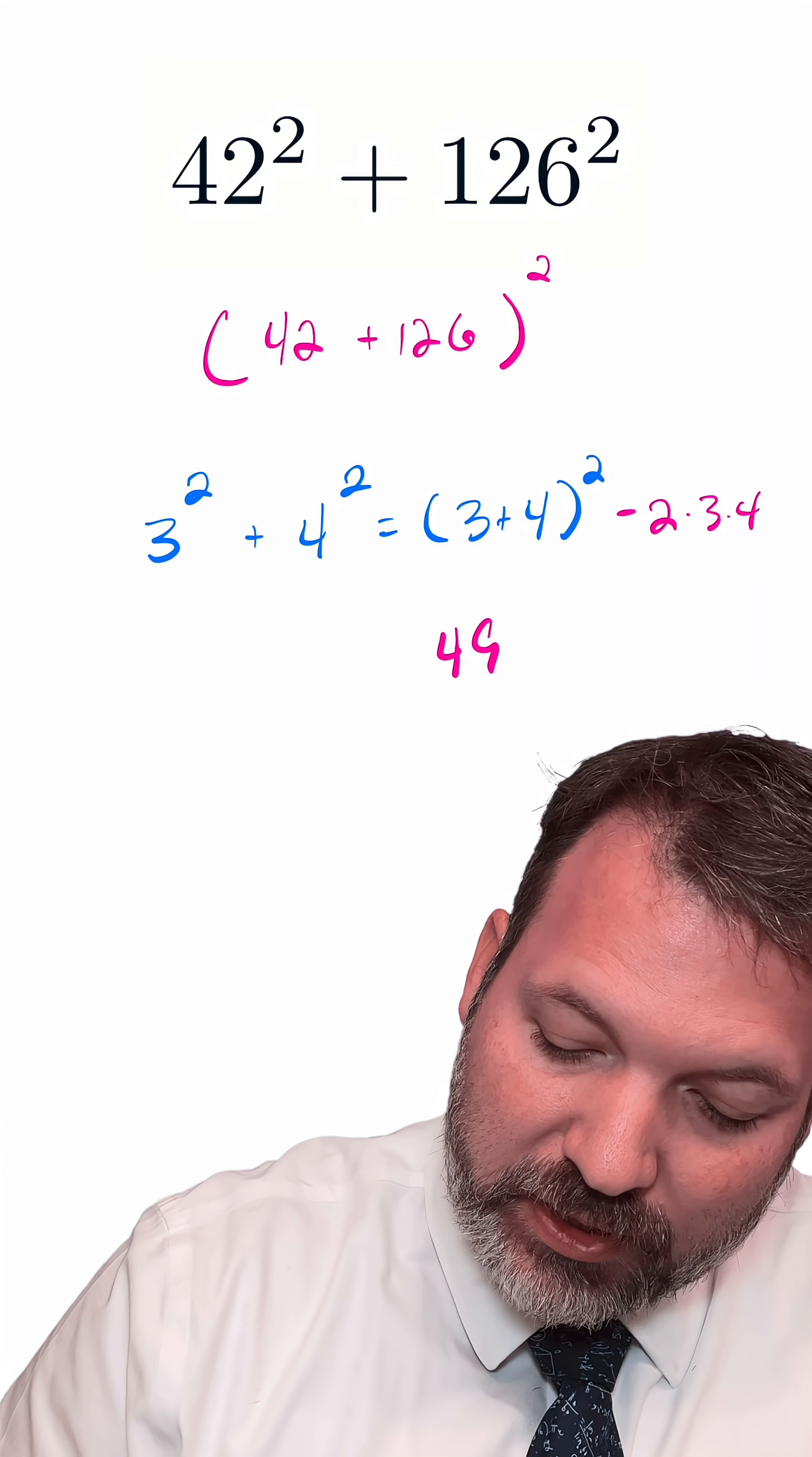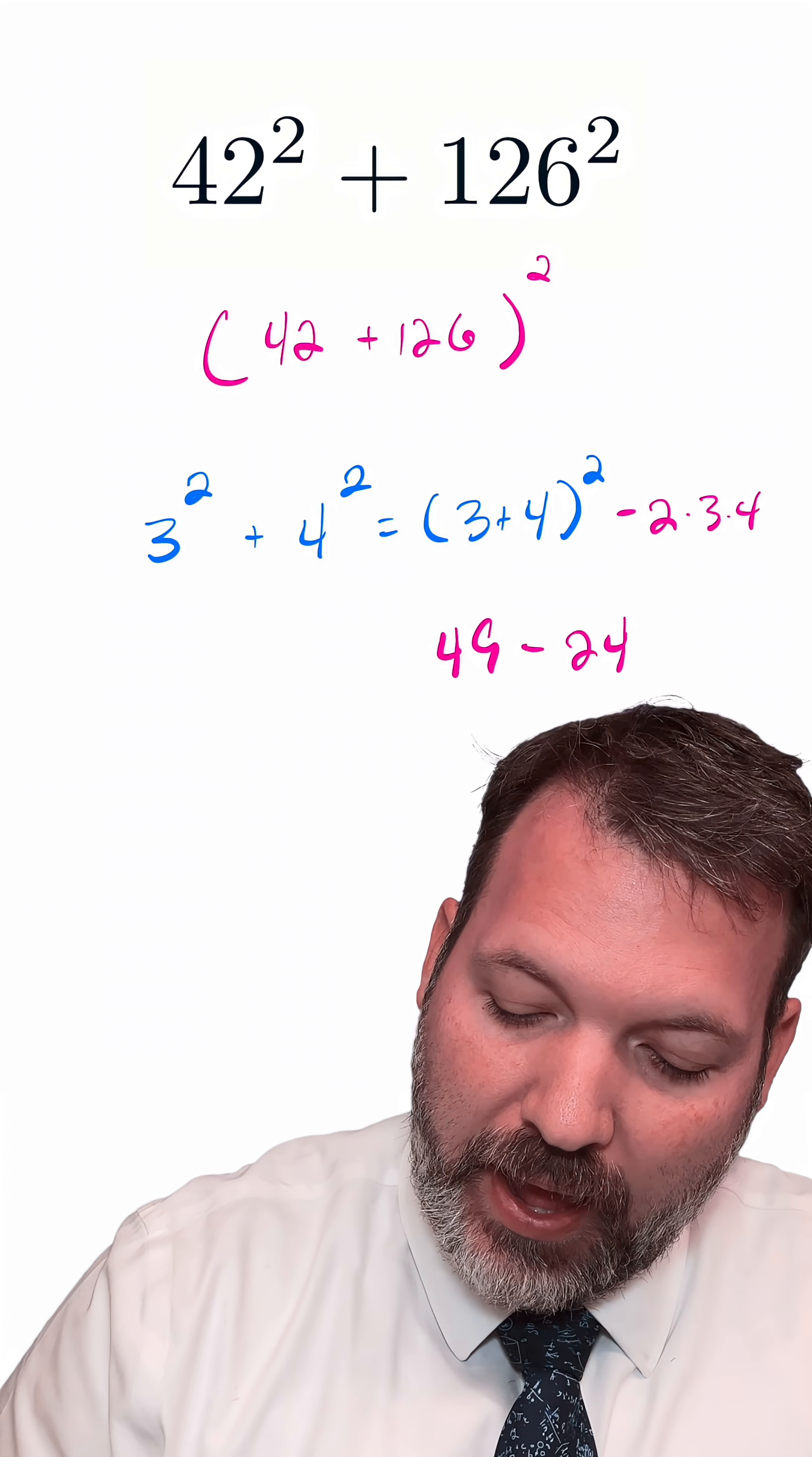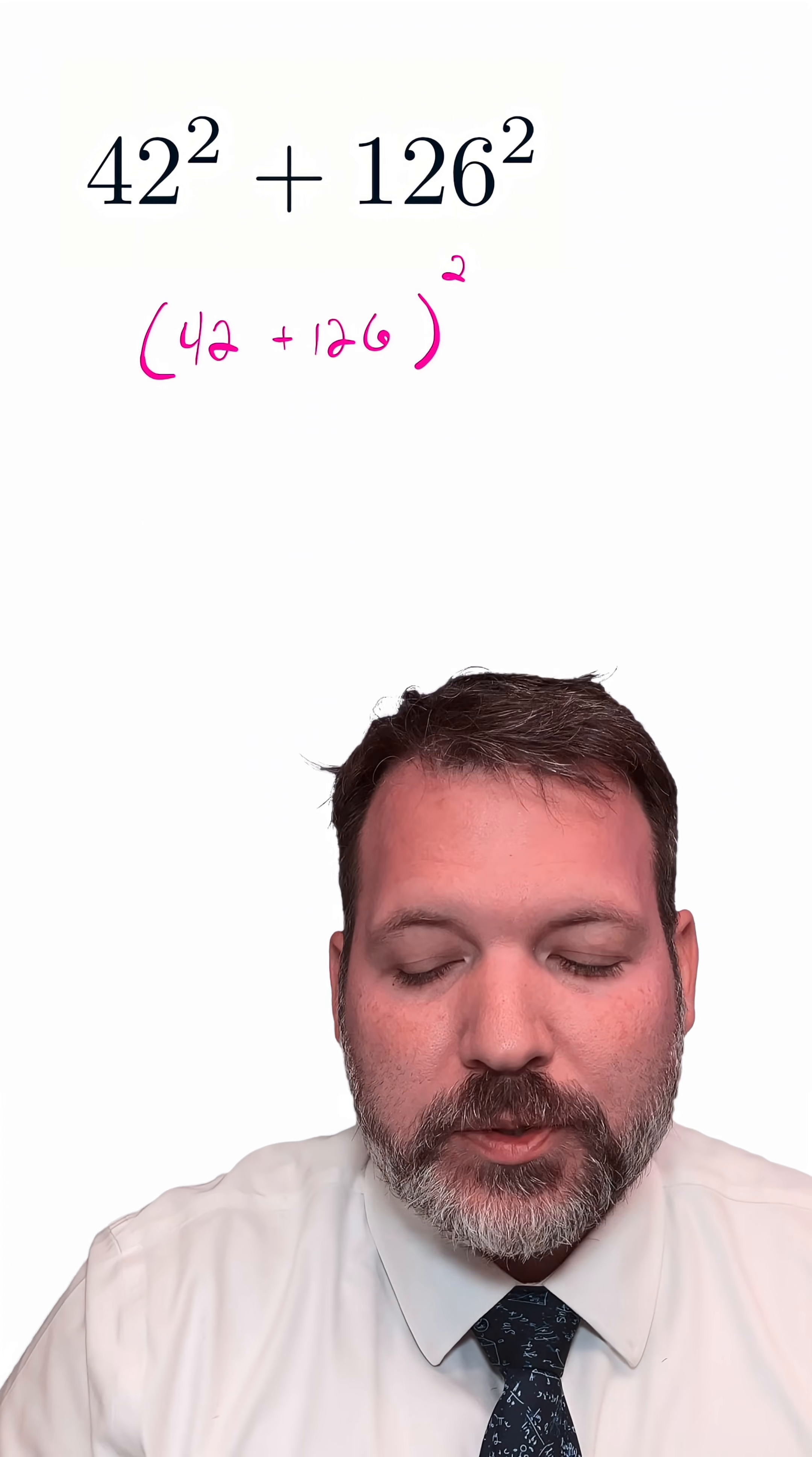3 + 4, again, that is 7², makes 49. 2 × 3 × 4 is 24, and in fact, 49 - 24 is 3² + 4², which makes 25. In this particular case though, that means to compute it that way...